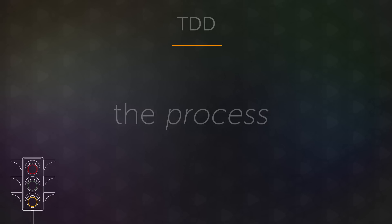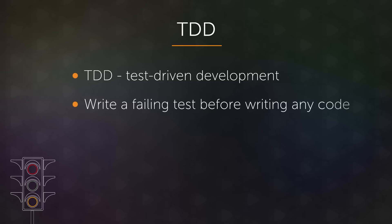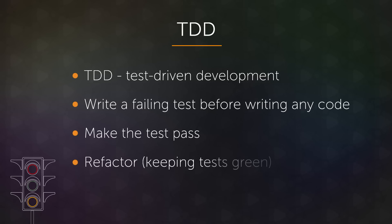The process we're talking about is largely referred to as TDD, or Test Driven Development. The main concept is that you write a failing test before you write any code, you make the test pass, and then you change the code to make it more resilient to future changes.